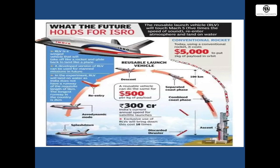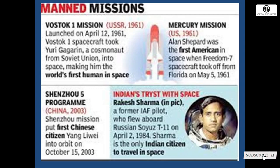Manned space missions history: Vostok 1 by USSR in 1961 saw Yuri Gagarin become the first human in space. The same year, USA's Mercury mission had Alan Shepard become the first American in space. China did it in 2003 with Yang Liwei in the Shenzhou mission. India's Rakesh Sharma, an IAF Squadron Leader, went to space with Russia's Soyuz T-11 on 2nd April 1984. When Indian PM Indira Gandhi asked how India looked from space, Rakesh Sharma replied 'Saare Jahan Se Accha Hindustan Hamara.'